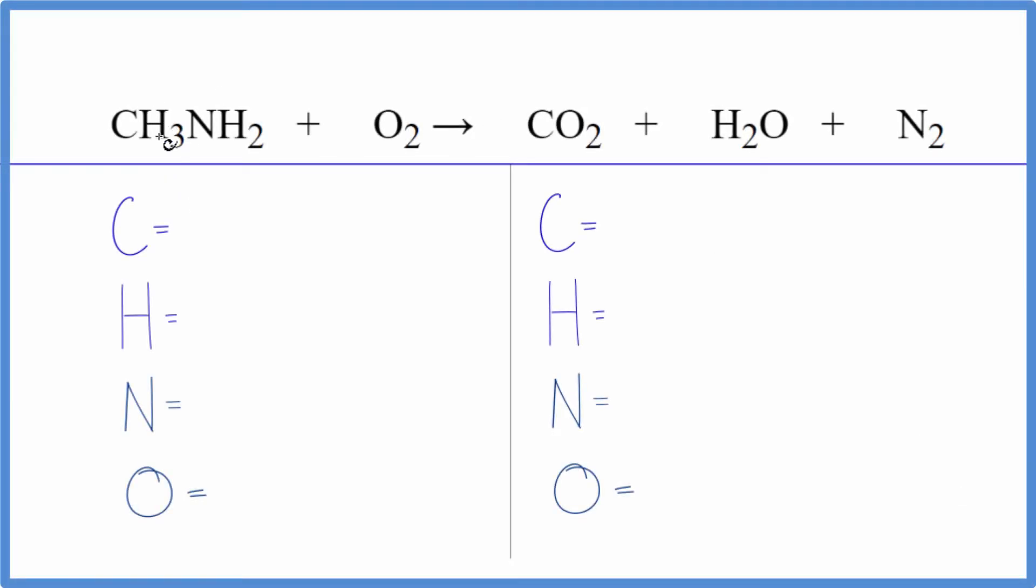In this video we'll balance the equation CH3NH2 plus O2 gives us carbon dioxide, water, and nitrogen gas. Let's count the atoms up and balance the equation. We have one carbon, and for hydrogens we have three plus two, we have five.